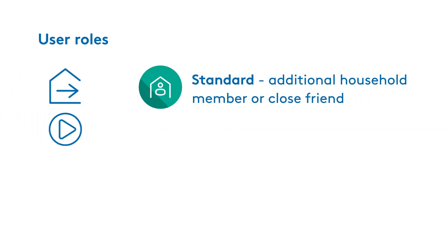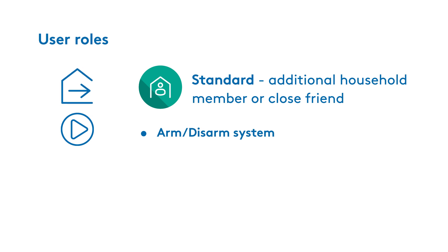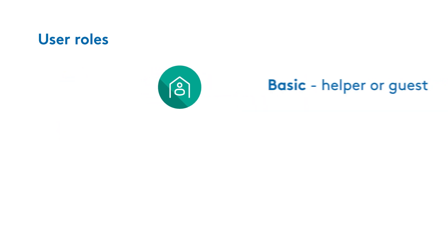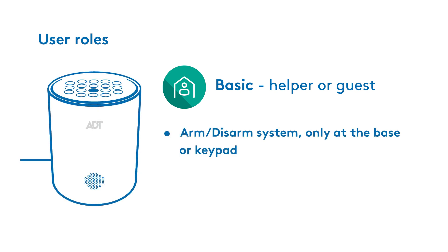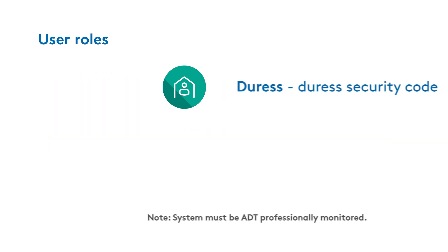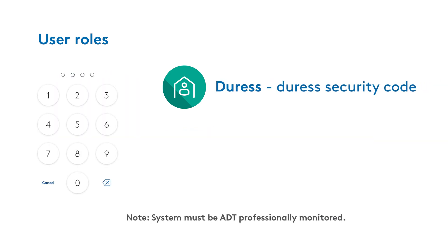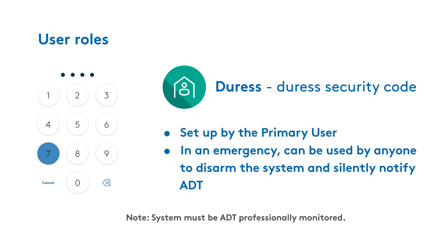Additional users include the standard user, a household family member or close friend with limited permissions and access to the system. And the basic user, like a dog walker or a guest, who can arm and disarm the system at the base or keypad. The primary user designates the duress user and sets up the duress security code. If your system is professionally monitored by ADT, any user forced to disarm the system can enter this code, discreetly alerting us to the situation.